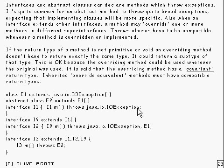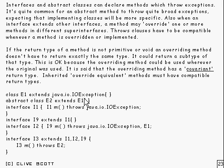Here we've got a class E1, which is an exception that extends java.io.IOException. And E2 extends E1, so it's a subclass.